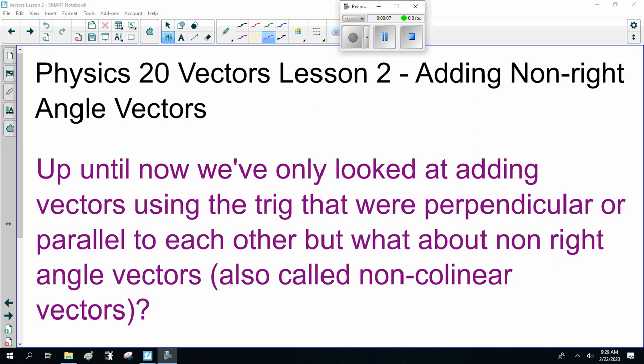Up until now, we've only looked at adding vectors using trig that were perpendicular or parallel to each other, but what about non-right-angle vectors? Also called non-collinear vectors.